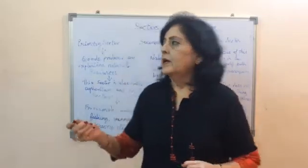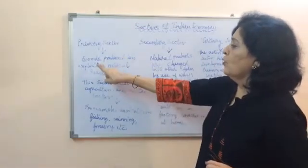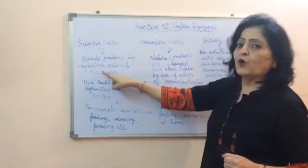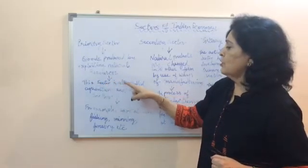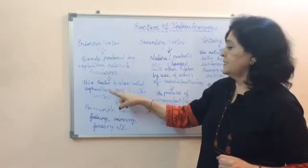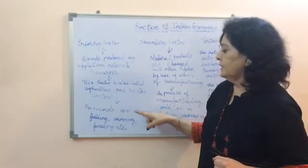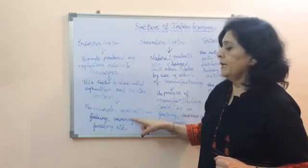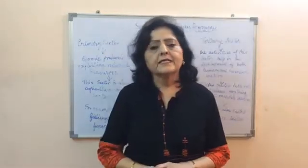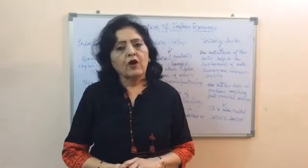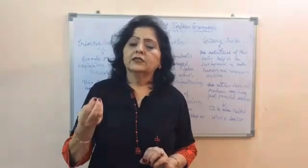Primary sector and its features: goods are produced by exploiting natural resources. This sector is also called the agriculture and related sector. For example, agriculture, fishing, mining, forestry, etc. This sector is called the primary sector because it provides the base for all the other two sectors.